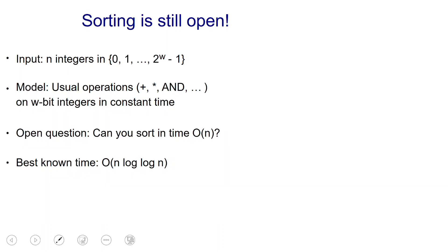Remarkably, sorting is still open — we still don't know what the complexity of sorting is. Here is a simple problem that is still open: if your input is n integers between 0 and 2^w − 1 for a parameter w, and you allow the usual operations like addition and multiplication on w-bit integers in constant time, it's still open whether you can sort in linear time, O(n). The best known time for this is O(n log log n), with a very non-trivial algorithm.